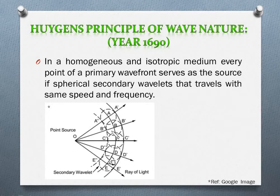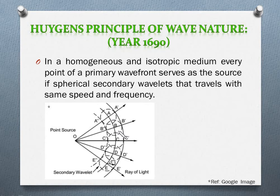Let's call this the primary wave front. Each point on this primary wave front will serve as a source and will produce secondary wavelets. For example, point A acts as a source of diverging wavelets, as does point B. These act as sources of secondary wavelets, and these secondary wavelets move with the same speed and frequency.